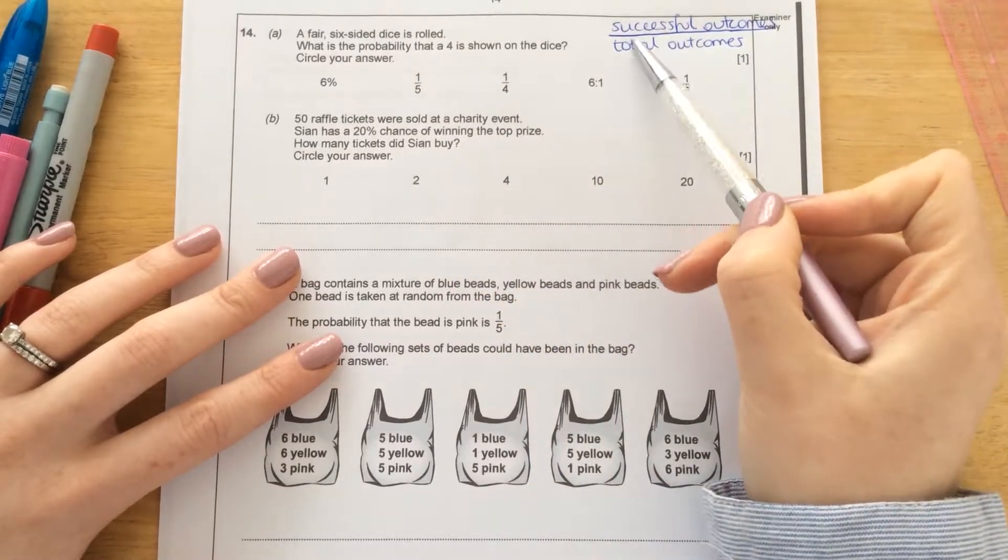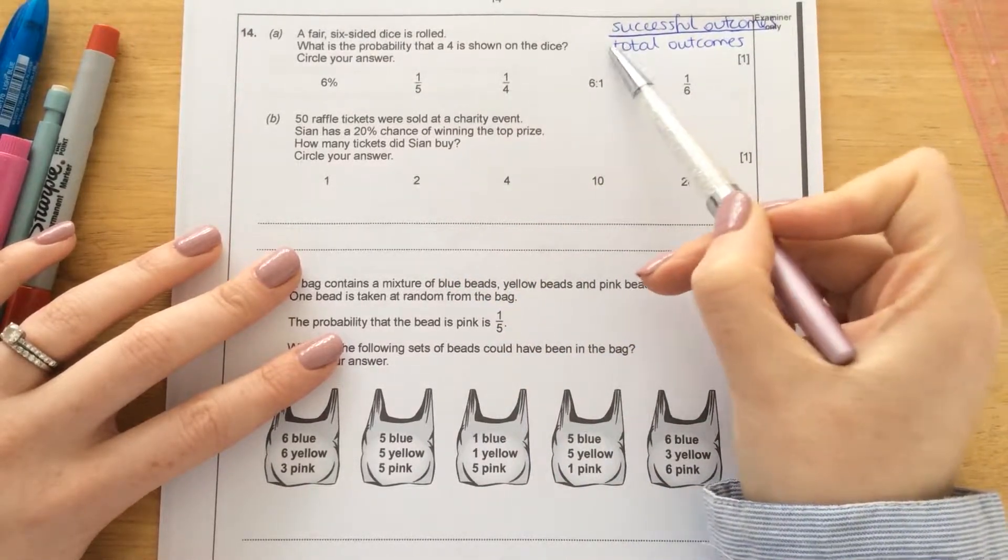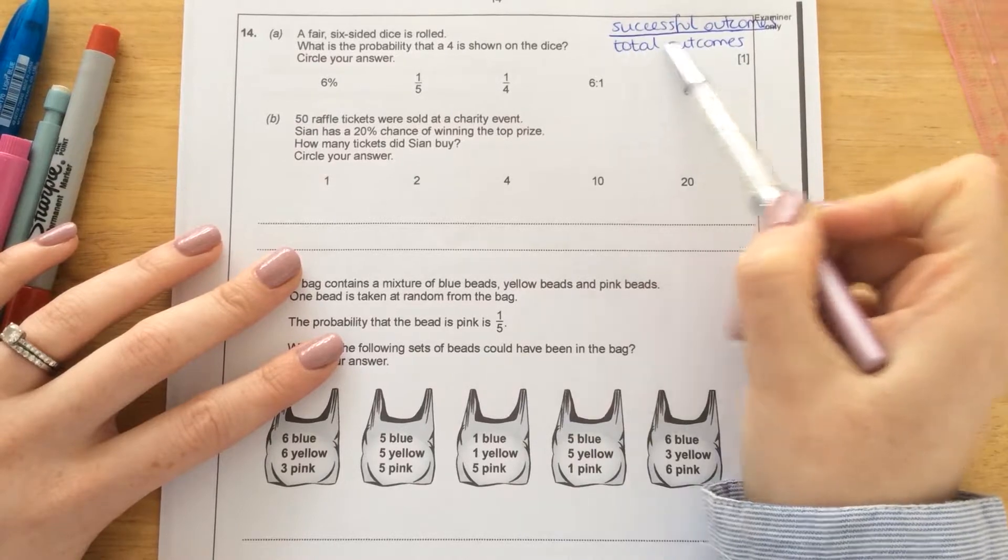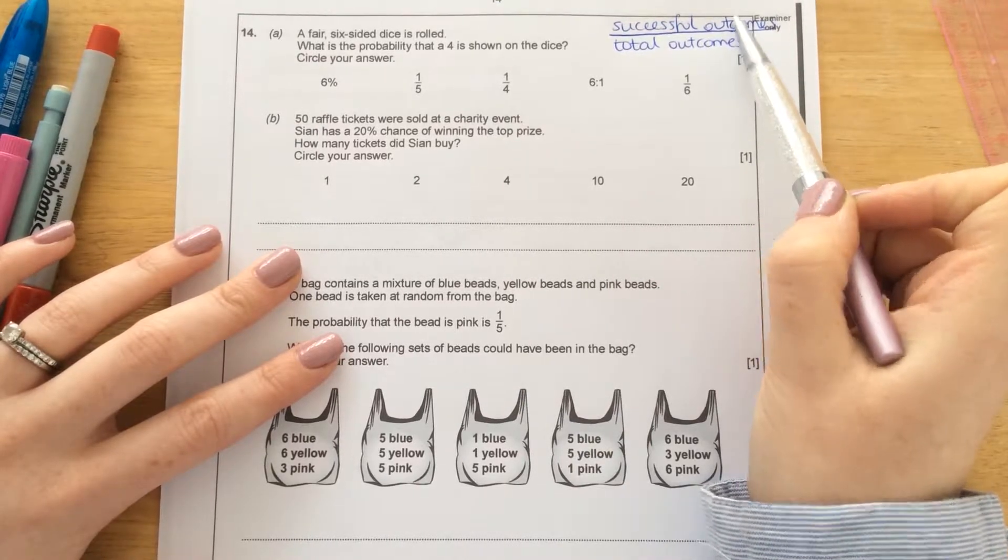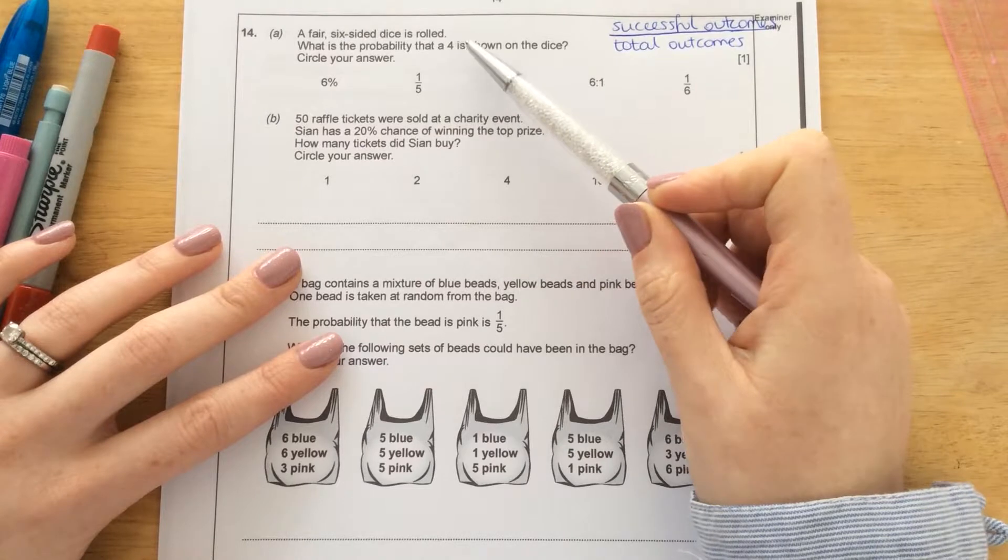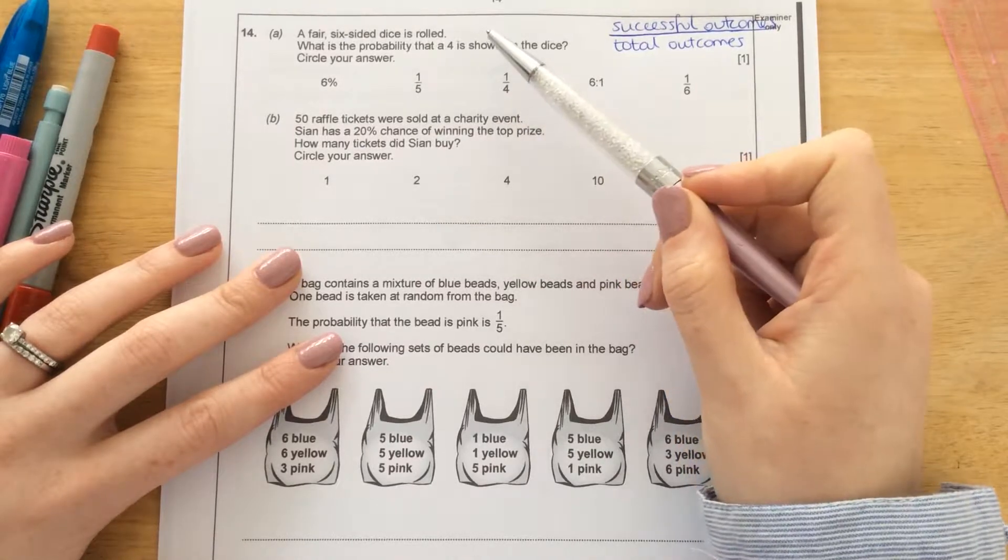So probability is represented like this. It's a fraction, total outcomes on the bottom and the successful outcomes on the top. So the total outcomes on a dice would be six because there's one, two,